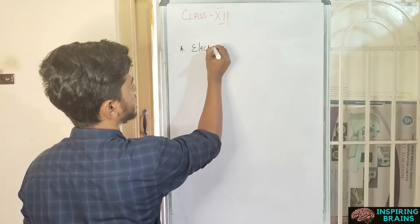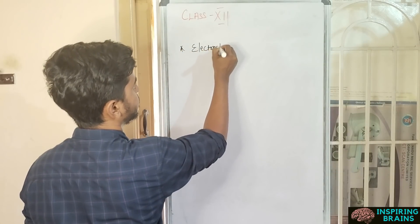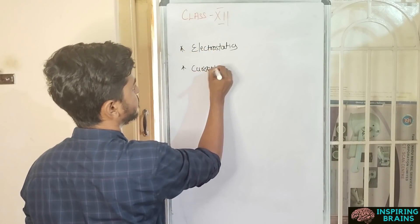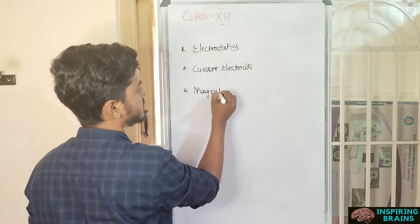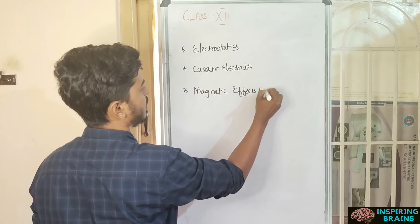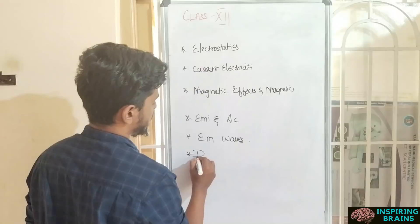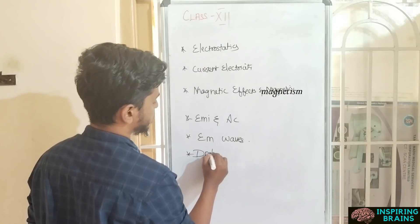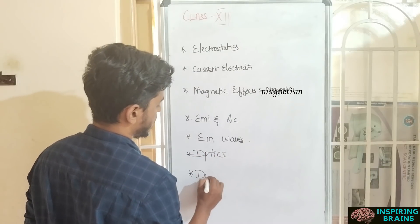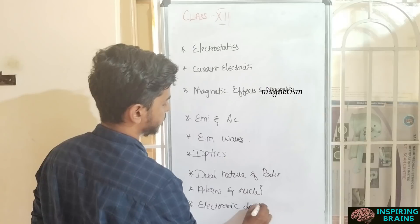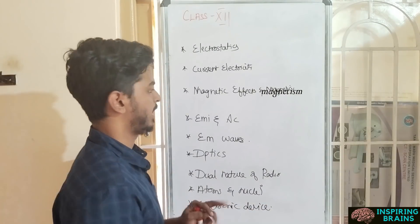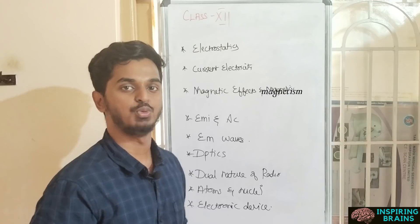The chapters in Class 12 are: Electrostatics, Current Electricity, Magnetic Effects of Current and Magnetism, Optics, and Electronic Devices. These are all the nine units in Class 12.